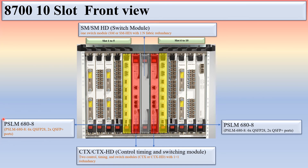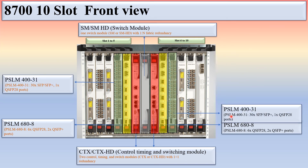The detail about this service line module has already been discussed in a separate video. In slot 4 and slot 7 there is a PSLM 400-31. The card name indicates the faceplate capacity is 400G and there are 31 ports on this faceplate.